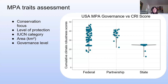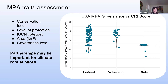We also explored relationships between climate robustness scores and five MPA traits: conservation focus, level of protection, IUCN category, area, and governance level. Using an inventory of traits for American MPAs, we plotted cumulative CRI scores of management and monitoring plans along with governance arrangement. We found that MPAs designated and managed as a partnership clustered around a higher mean CRI score than those managed at a single level of governance. This suggested that while all governance levels were achieving some level of climate adaptive management, there might be an advantage to partnerships — supported by the fact that most plans described relationships with external organizations to execute their operations.